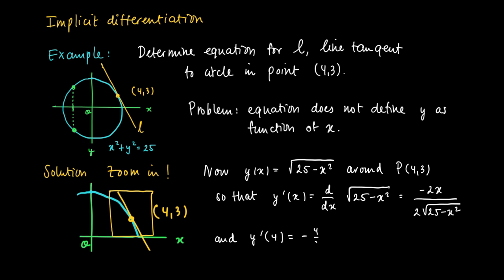So substituting 4, which is the relevant x value, returns the derivative minus 4 over 3. So the equation of the line L equals y minus 3 equals the derivative times x minus 4, which equals y equals 3 minus 4 over 3 times x minus 4.